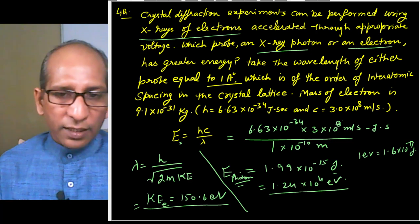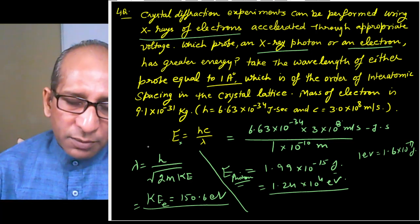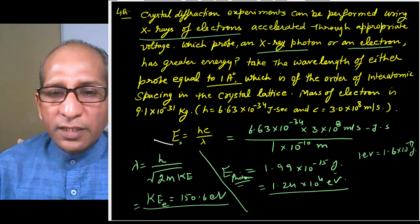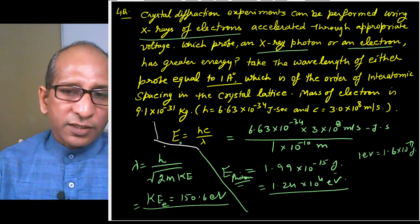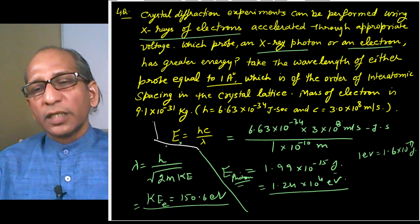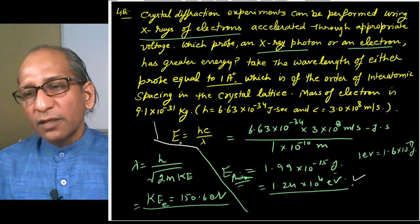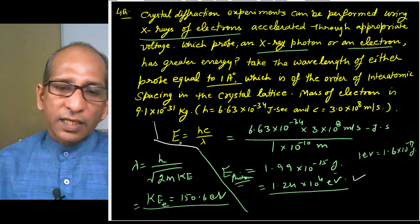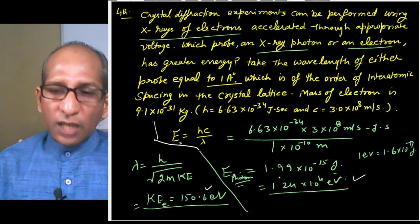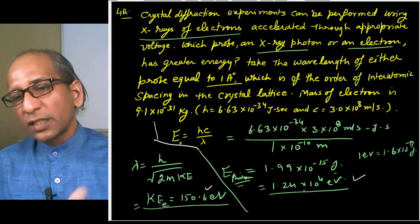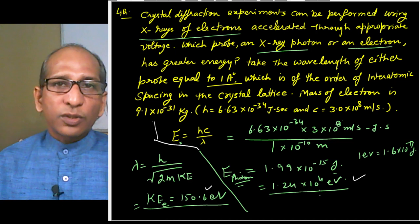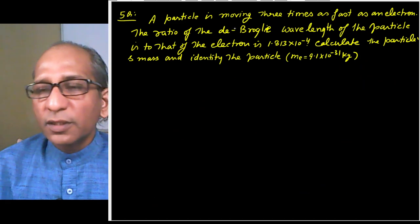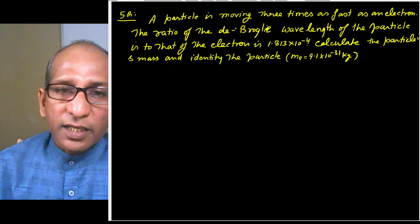From this result: when performing diffraction using either X-ray photons or electrons with the same wavelength (1 Å), the X-ray photon has much higher energy (∼12,400 eV) compared to the electron (∼150 eV). Therefore, X-ray photons penetrate the material more deeply than electrons.